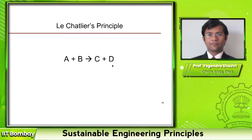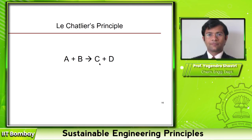Le Chatelier's principle basically says that the equilibrium is a function of quantity. If you have a lot of A and B, the equilibrium will be pushed forward. If you have very little C and D, the equilibrium will again be pushed forward. The question is: which is a better option — to add A and B, or to remove C and D? Pause and think about this before we move ahead.